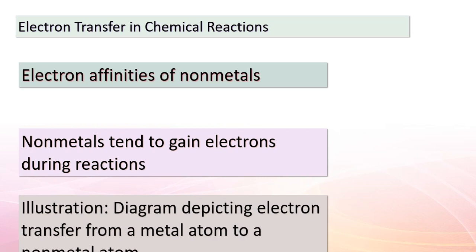Today, we're delving deeper into chemical reactions and how substances interact. Our next focus is on electron transfer — a fundamental concept. Non-metals, with their notable negative electron affinities, exhibit a tendency to gain electrons during reactions. This sets the stage for fascinating reactions between non-metals and metals. Take aluminum and bromine: when they react, aluminum's electrons are transferred to bromine, leading to the formation of aluminum bromide.